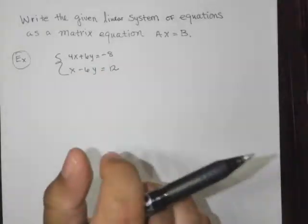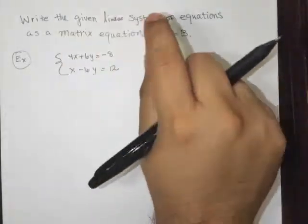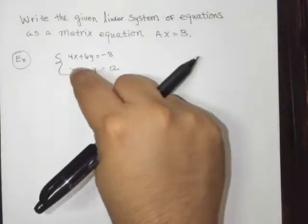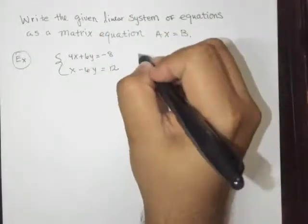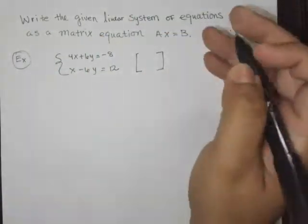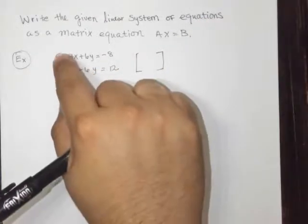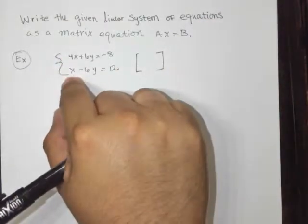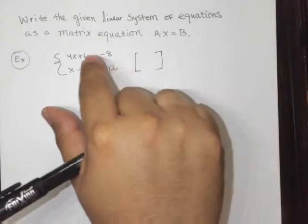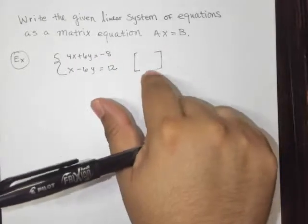So let's go ahead and start off with this. What we do is create the coefficient matrix and preserve the order. So be sure that if this is your x column, this is your x column. If this is your y column, this is your y column.